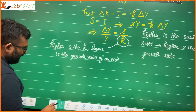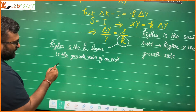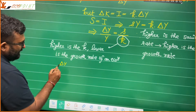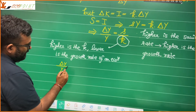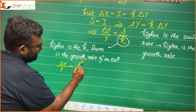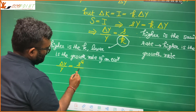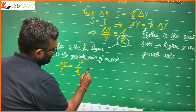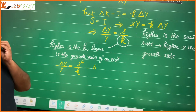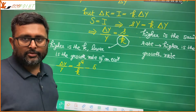Some books also write this formula as: delta Y upon Y equals gross savings rate upon small k — which is the capital-output ratio — minus delta, which is the depreciation rate. This is also one of the ways in which you write the growth rate in the Harrod-Domar model.